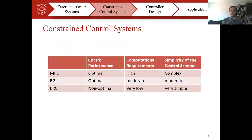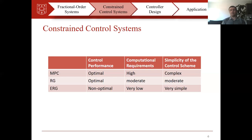Before starting with the details of the control scheme, I'd like to point out this comparison study. This table compares three methods with respect to three performance metrics: model predictive control, reference governor, and explicit reference governor. Model predictive control provides the optimal solution but it's computationally expensive and its implementation is critical. Reference governor is also kind of optimal, though the cost function is different, and it still requires solving an optimization problem, so its implementation is not that easy. For the explicit reference governor, or ERG in short, it's not optimal, but its computation cost is very low and its implementation is simple.